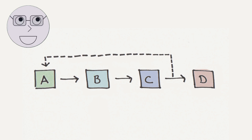At its core, control theory is concerned with the study of feedback systems. A feedback system is a system that uses the output of a process to control the input to that process. This feedback loop allows the system to adjust its behavior based on the output it produces.